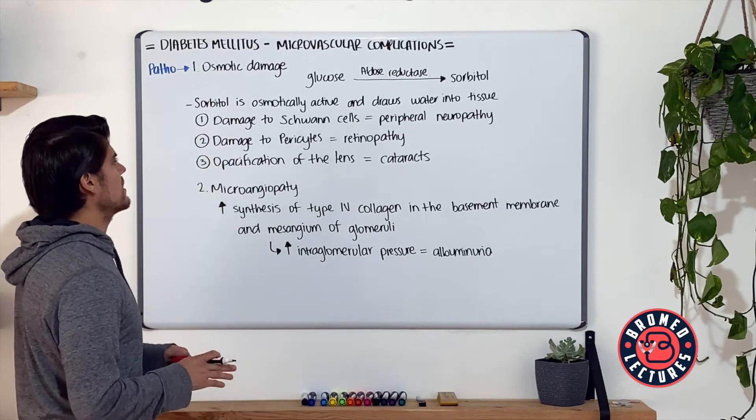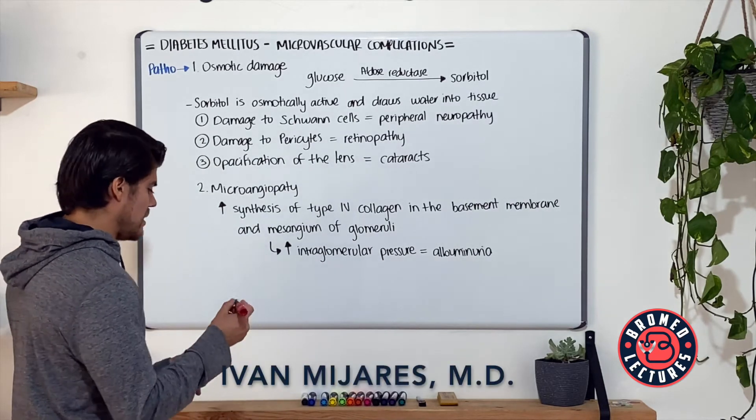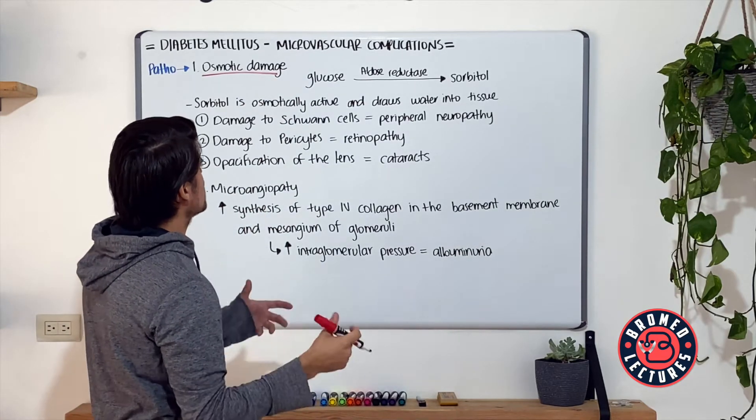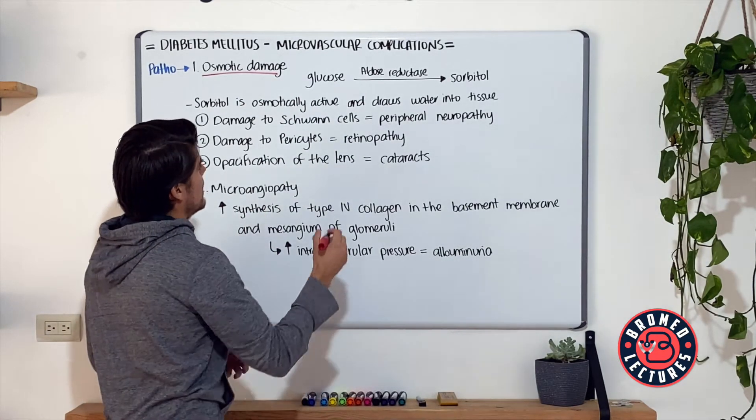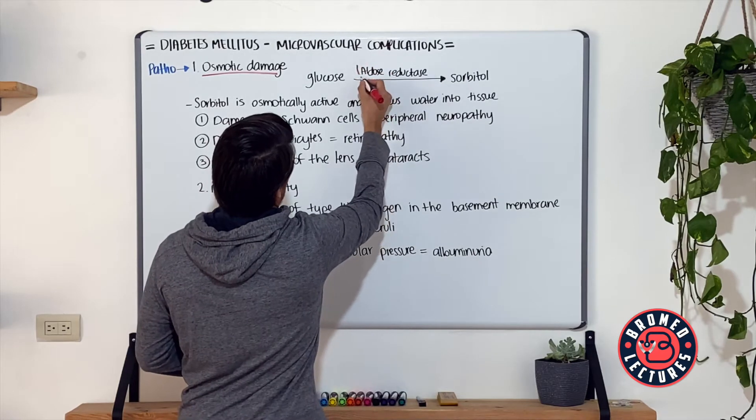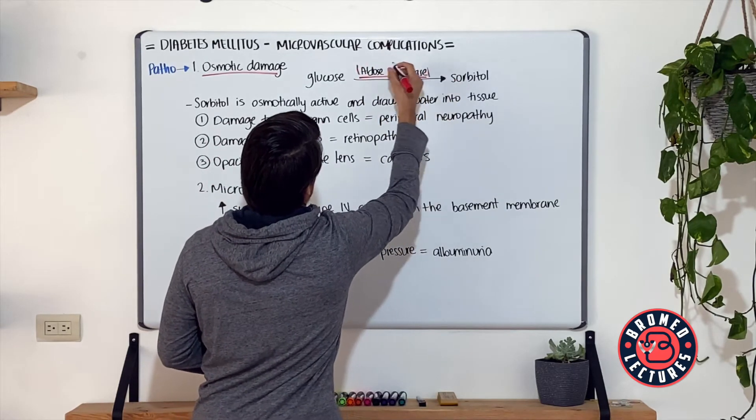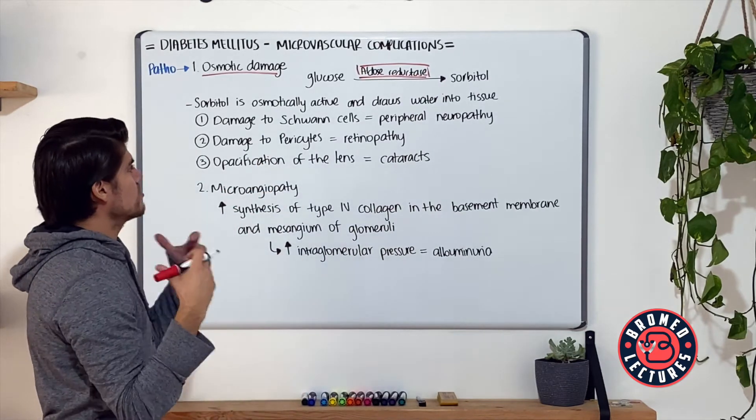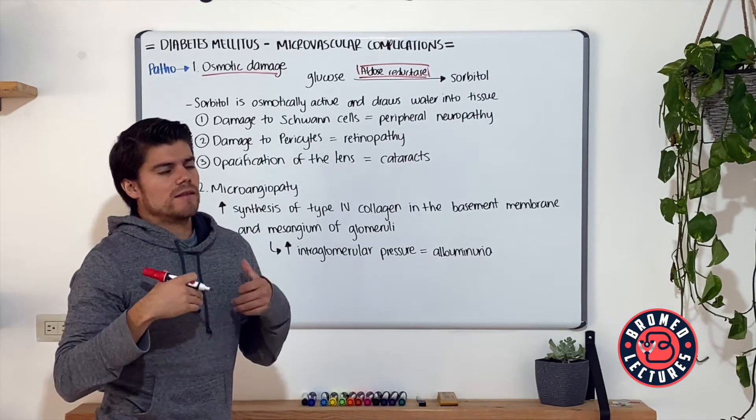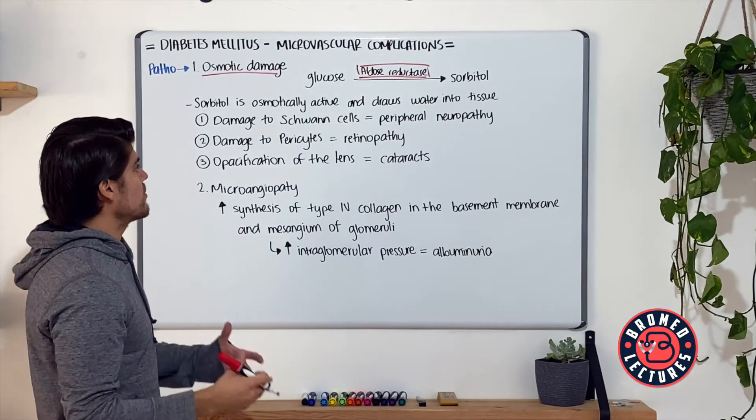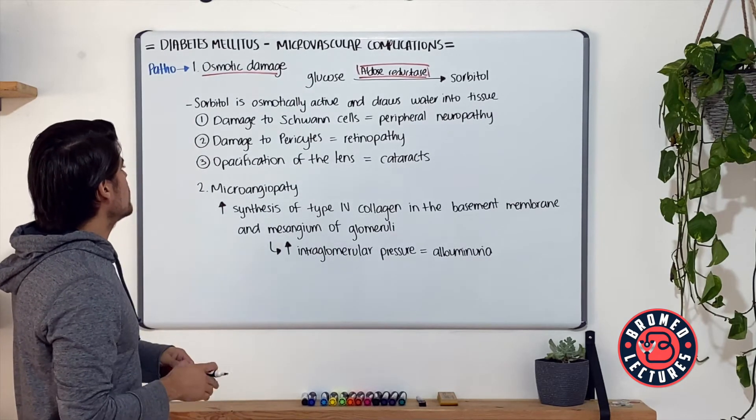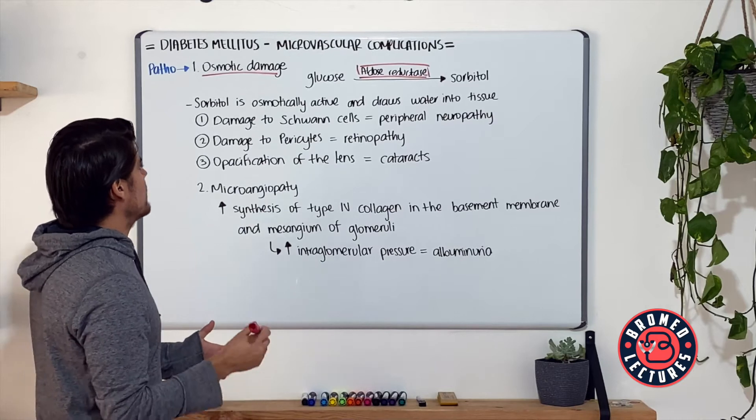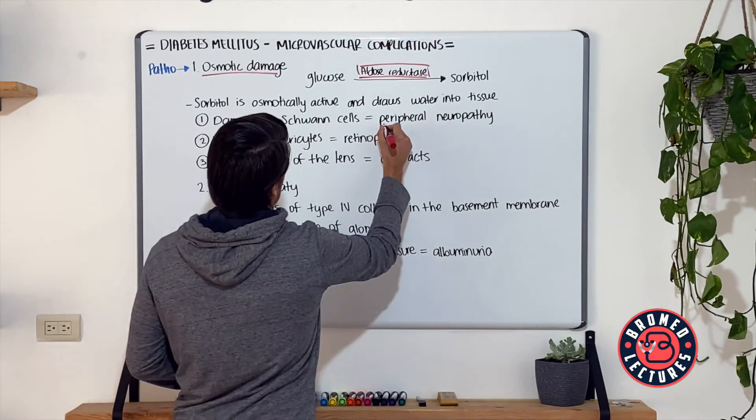The first one is osmotic damage, in regards to the formation of sorbitol because of the excess glucose and the function of aldose reductase inside cells. This sorbitol is osmotically active and is going to draw water into tissues, and depending on the tissue, it's going to cause the problem. The first one is damage to Schwann cells that leads to peripheral neuropathy.